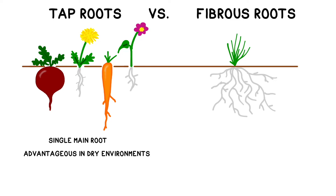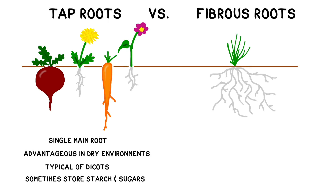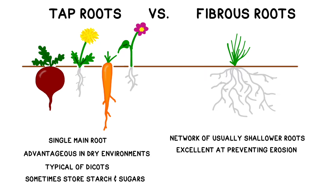Of course, this also makes them much harder to harvest or remove — think about how difficult it is to remove dandelions from your lawn. Typically, dicots have tap roots, and some tap roots, like those found in carrots, jicama, or beets, also function as a storage space for sugars and starches. Fibrous roots have a network of smaller roots that protrude outwards, usually at a much shallower level. These can be excellent at helping to prevent soil erosion and are typical of monocots such as grasses.